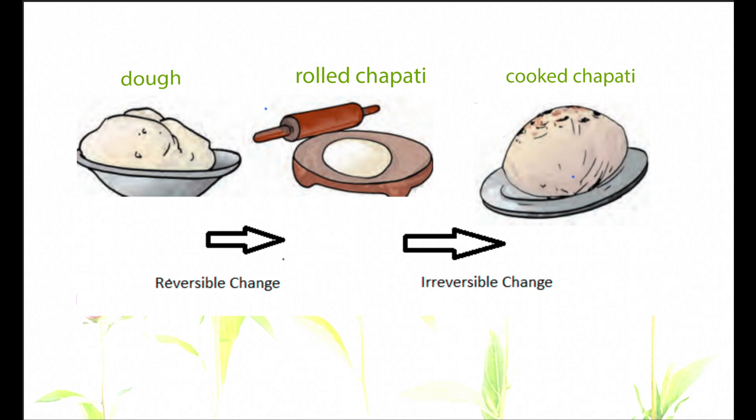We can again make a bowl of dough or add it back to the dough from the rolled chapati — so this is a reversible change. But when the rolled chapati is cooked, we cannot get dough back from that cooked chapati, so this is an irreversible change.